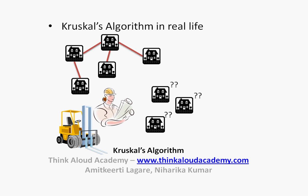Let us take a Kruskal's algorithm example in real life. We have a neighborhood where everybody is connected to each other, and this particular connection represents the digital broadcasting system between all the houses — say a cable TV provider like Comcast has connected all the houses through fiber optic cables to his central station. Now he has to lay cables to a new neighborhood, and his job is to ensure that the cost of laying the cables and the amount of digging is minimized. That is what Kruskal's algorithm helps you decide.